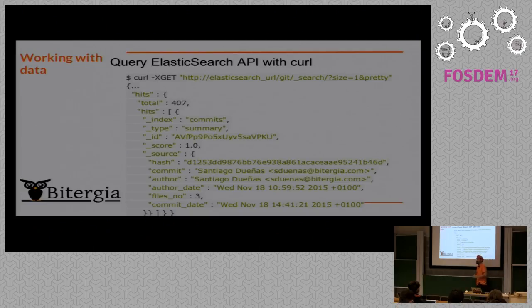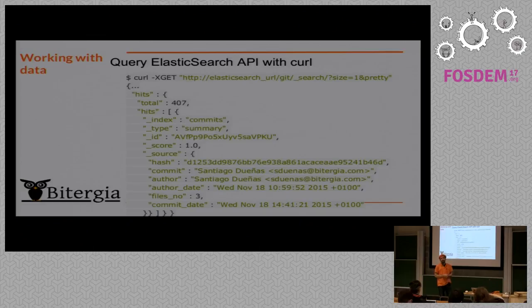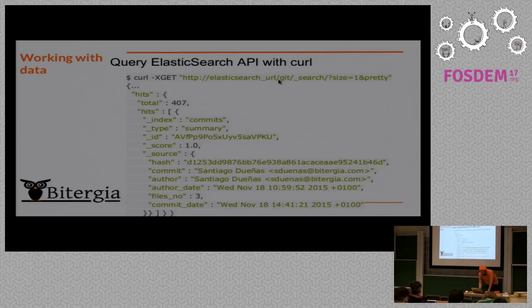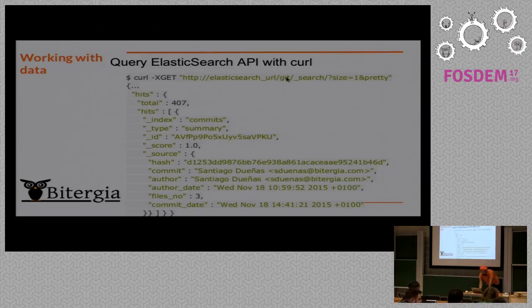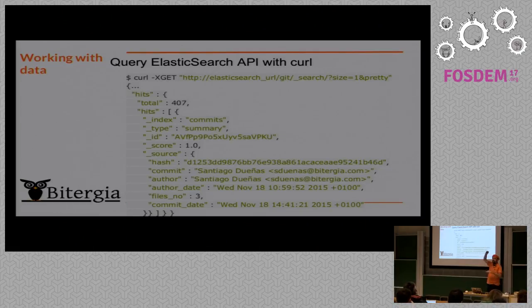The second example requires database access. The simplest approach is to access Elasticsearch with CURL. Elasticsearch has a very simple HTTP REST interface and you can use CURL or similar tools to access the data. The main thing is to know the Elasticsearch query language, which is not that difficult. This example query specifies the Elasticsearch instance, the git index, and a search query — in this case, asking for one result and prettifying the JSON output so it's human-readable.